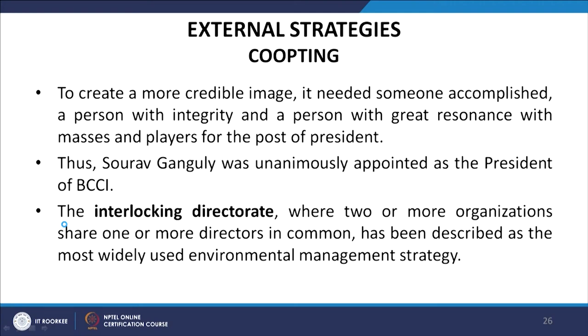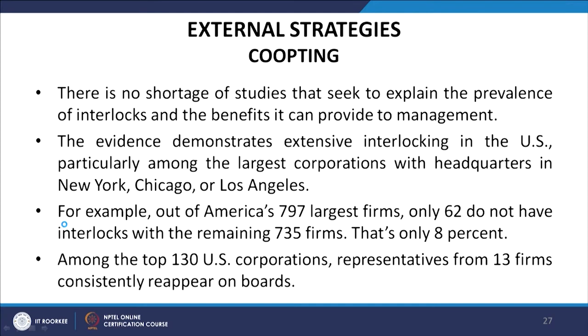The interlocking directorate — where two or more organizations share one or more directors in common — has been described as the most widely used environmental management strategy. Research seeks to explain the prevalence of interlocks and the benefits they provide to management. The evidence demonstrates extensive interlocking in the US, particularly among the largest corporations headquartered in New York, Chicago or Los Angeles. Out of America's 797 largest firms, only 62 do not have interlocks — that is only 8 percent. Among the top 130 US corporations, representatives from 13 firms consistently reappear on boards.